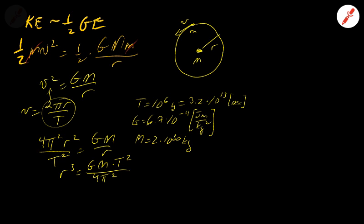So using these values, plugging it into the equation for r³, I get r³ equals about 3.48 × 10⁴⁵ meters cubed, and so that means the size of the orbit is about 1.5 × 10¹⁵ meters.